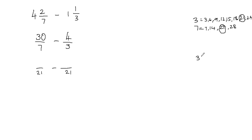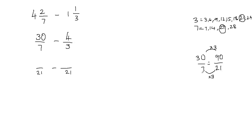I'm going to write my fraction 30 over 7. We're trying to generate an equivalent fraction. What do I multiply by 7 to make it equal to 21? I can multiply the denominator by 3. If I multiply my denominator by 3, I also have to multiply my numerator by 3 to keep the fraction balanced. So 30 times 3 gives me 90, and I can replace 30 over 7 with 90 over 21.